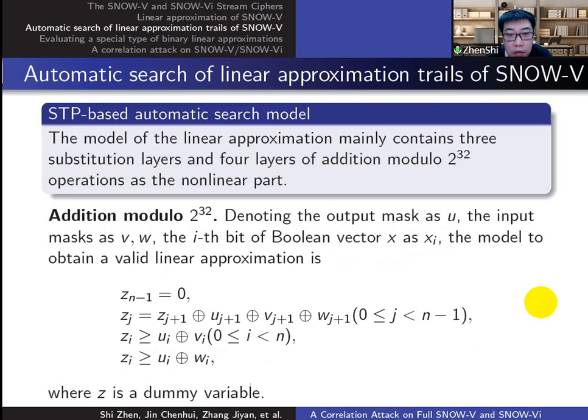We modeled a set-based automatic search program and used the STP solver to search for linear trails with high correlations. There are two nonlinear transformations in the approximation process: the modular addition and S-box.